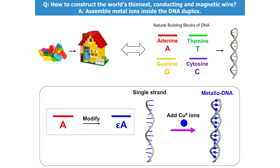This is where my research comes into play. I use the most common organic molecule known to man — DNA — to arrange the metal atoms in a lab. DNA can be built using four building blocks: adenine, thymine, guanine, and cytosine, or A, T, G, and C. But now you'll be wondering: what about the metal ions?